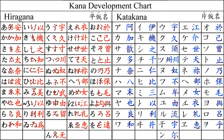Kana are syllabic Japanese scripts, a part of the Japanese writing system contrasted with the logographic Chinese characters known in Japan as kanji. There are three kana scripts: modern cursive hiragana, modern angular katakana, and the old syllabic use of kanji known as man'yōgana, which was ancestral to both.